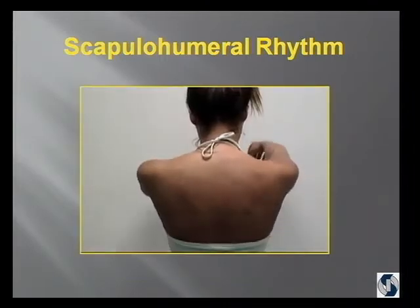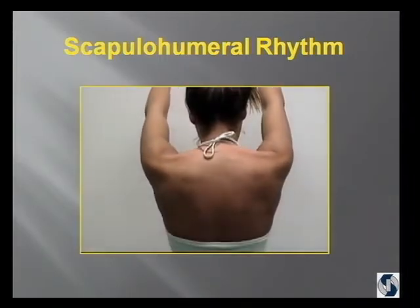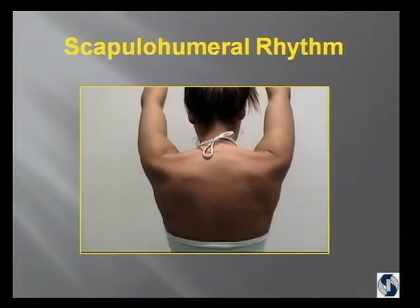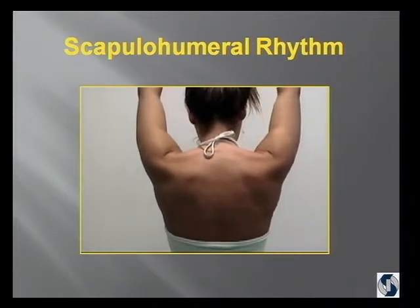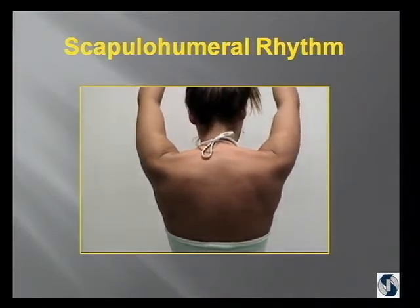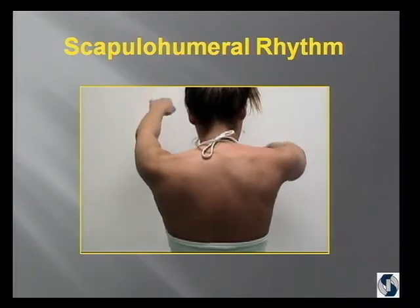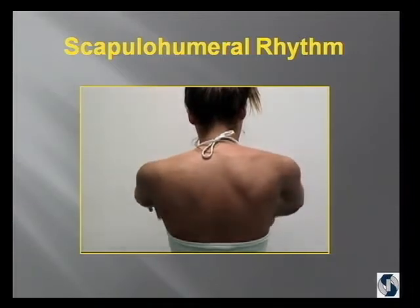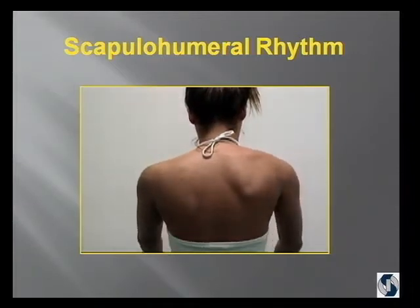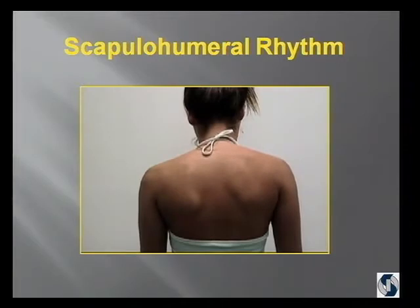Looking at scapulohumeral rhythm — this is a high school water polo player with a right shoulder problem. If you didn't look from the back, you would say she had normal range of motion, but watch what she does with her scapula. That's her abnormal rhythm. She had a SLAP lesion.